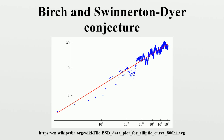Current status: The Birch and Swinnerton-Dyer conjecture has been proved only in special cases. Coates and Wiles proved that if E is a curve over a number field F with complex multiplication by an imaginary quadratic field K of class number 1, with F equal to K or Q, and L is not zero, then E is a finite group. This was extended to the case where F is any finite abelian extension of K by Arthaud.